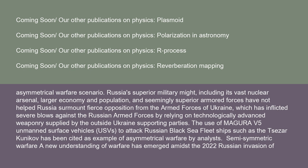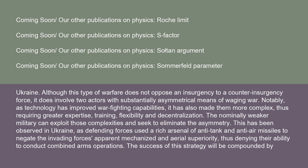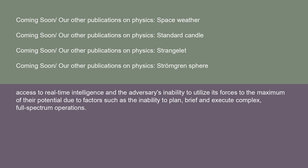A new understanding of warfare — semi-symmetric warfare — has emerged amidst the 2022 Russian invasion of Ukraine. Although this type of warfare does not oppose an insurgency to a counterinsurgency force, it does involve two actors with substantially asymmetric means of waging war. As technology has improved warfighting capabilities, it has also made them more complex, requiring greater expertise, training, flexibility, and decentralization. The nominally weaker military can exploit those complexities to eliminate the asymmetry — as observed in Ukraine, where defending forces used anti-tank and anti-air missiles to negate the invading forces' mechanized and aerial superiority, thus denying their ability to conduct combined arms operations.